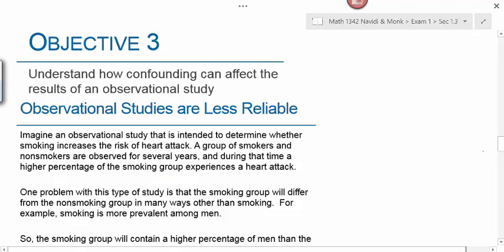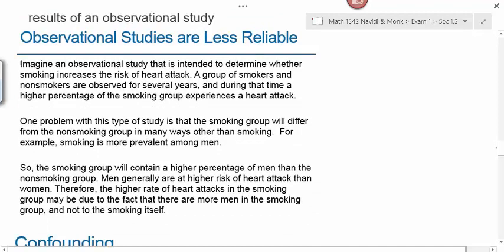Objective three is understanding how confounding can affect results of an observational study. Confounding occurs when results come not from the treatment being measured but from some outside influence that was not accounted for. Consider an observational study on whether smoking increases heart attack risk. Smoking groups differ from non-smoking groups in many ways besides smoking. For example, smoking is more prevalent among men, and heart attacks are also more prevalent among men. Since the smoking group contains a higher percentage of men, the higher heart attack rate may be due to gender, not smoking.